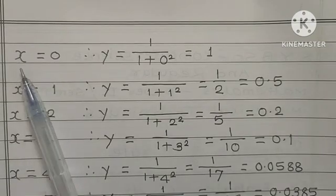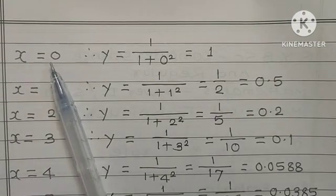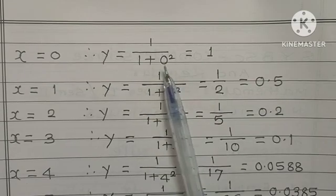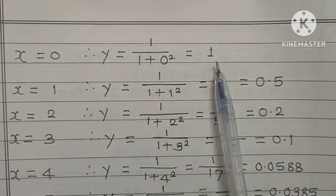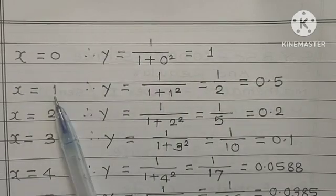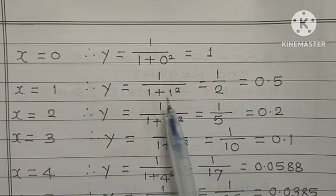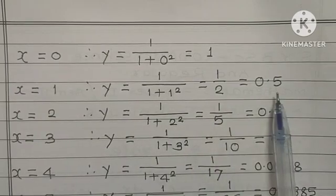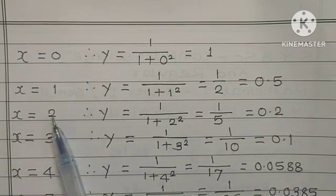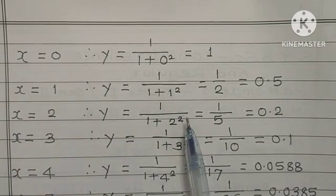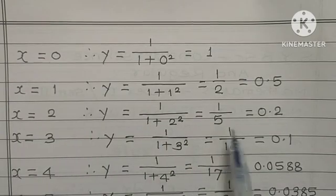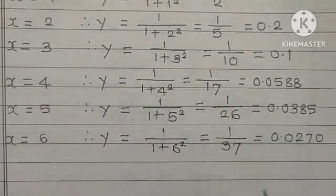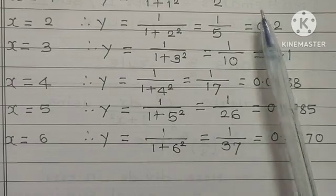Now friends, if you put X is equal to 0, how we get Y? 1 upon 1 plus 0 square, that is 0. So 1 upon 1, that is 1. Similarly, X is equal to 1. So Y is equal to 1 upon 1 plus 1 square. X is 1, 1 upon 2, that is 0.5. X is equal to 2. So Y is equal to 1 upon 2 square. 2 square is 4, 4 plus 1 is 5. In this way, you can find all values of Y. These are the values of Y.